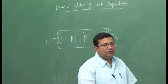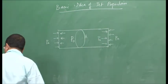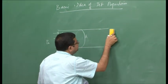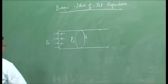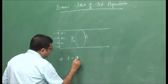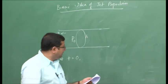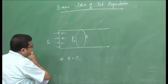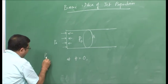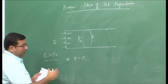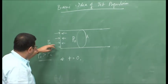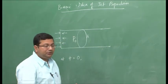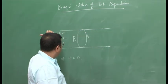Let us now consider a scenario where we remove one side. At time t equal to 0, we remove one side. As soon as we remove this side, on that side of the system P_naught is greater than P_a. Therefore, the force acting in one direction is greater than the force acting in the other direction, so there is a net force acting in that direction.